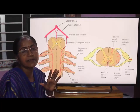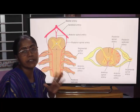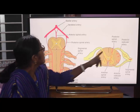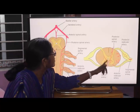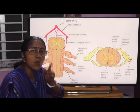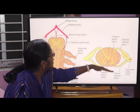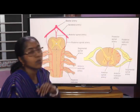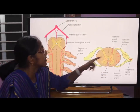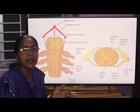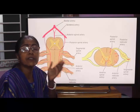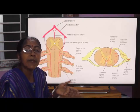These small branches enter into the substance of the spinal cord and supply the posterior one-third of the spinal cord. So, the anterior spinal artery supplies the anterior two-thirds of the spinal cord, and the posterior spinal arteries — which are two in number — supply the posterior one-third. These two arteries are reinforced by the small segmental arteries.